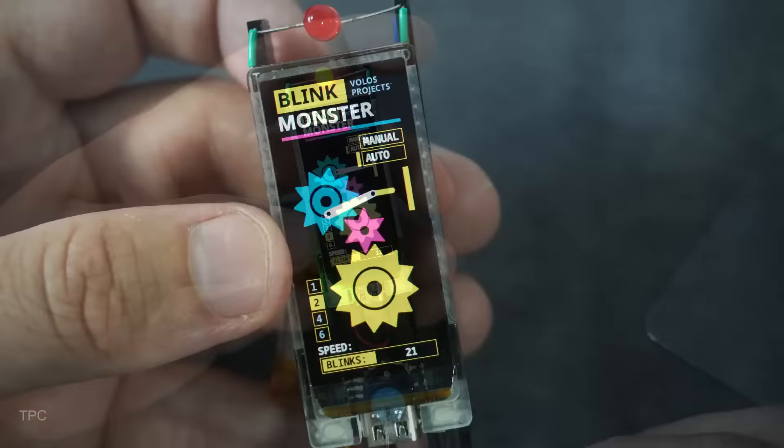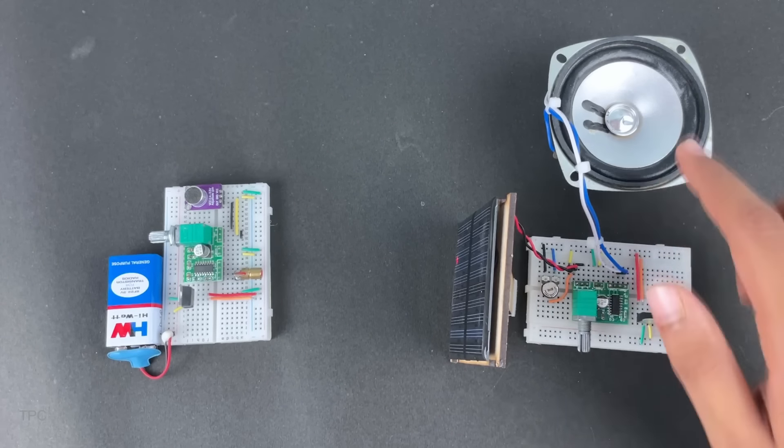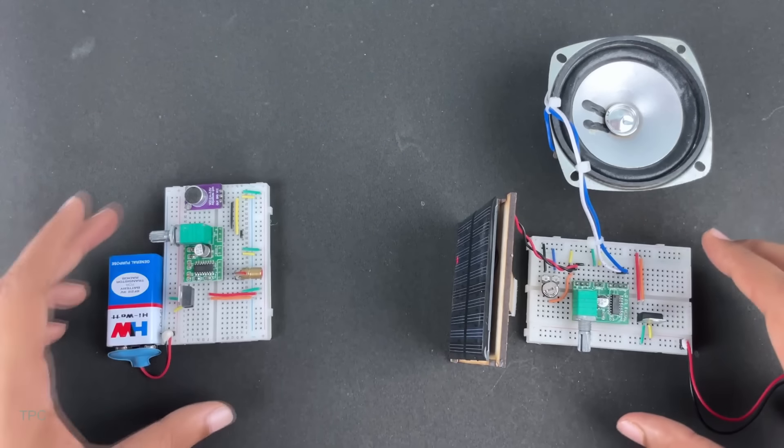Number 13. The Circuit Digest team showcased a fascinating method for wirelessly transmitting audio signals without any microcontrollers, using only a laser and a solar panel. In the transmitter circuit, a microphone picks up the audio, amplifies it, and sends it through a laser diode. On the receiving end, a solar panel captures the laser beam, converts it back into an audio signal, amplifies it, and plays it through a speaker.